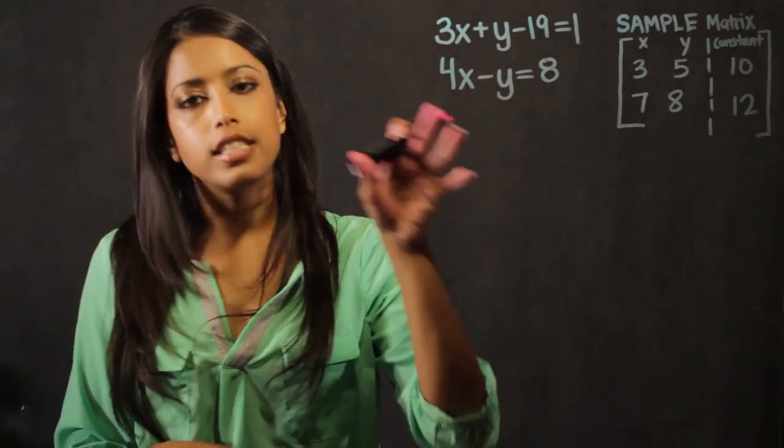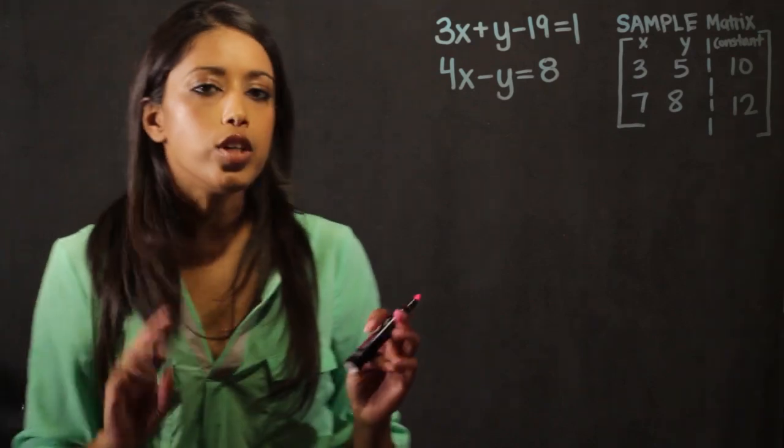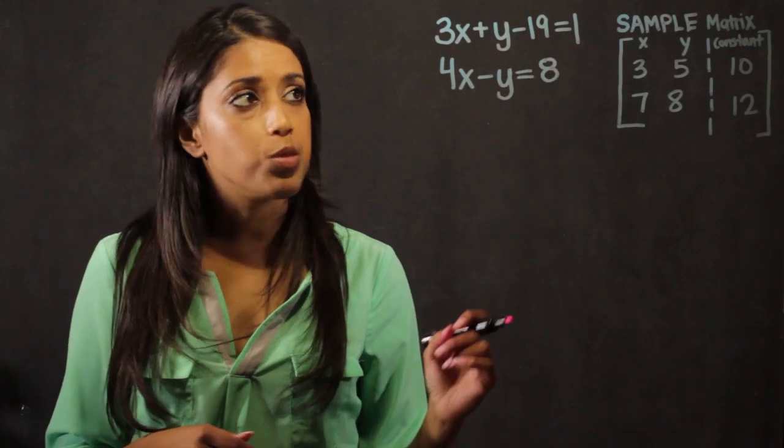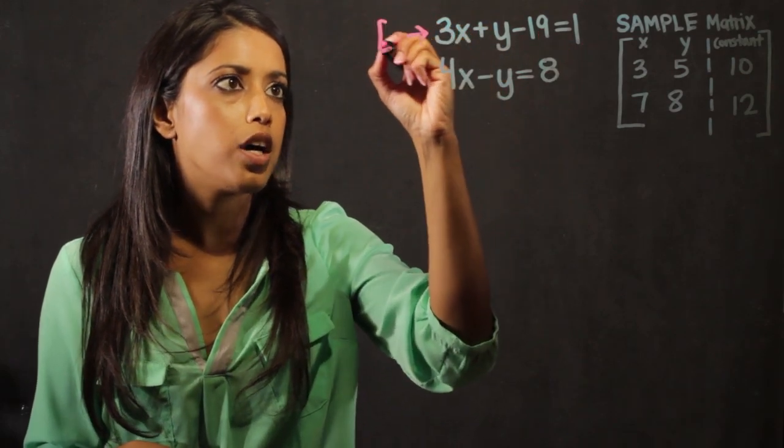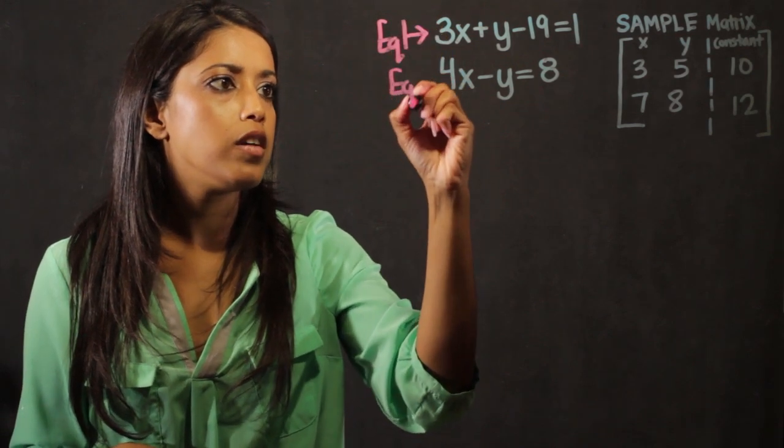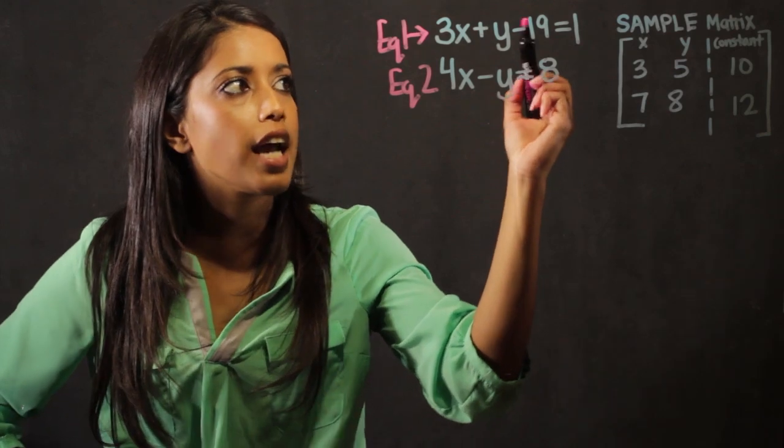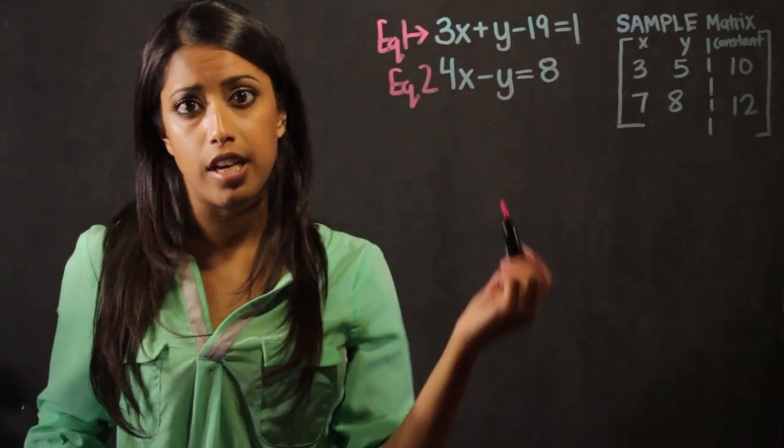So we're going to take this example problem here, and we're going to work through it. There's a lot of steps. So the first step is make sure that all of your constants are on the right side of the equal sign. If I look at this first equation, we're going to call it equation 1, and this one equation 2. So in our first equation, you can see that 19 has no variables attached to it, so we're going to want to move it to the other side right away.